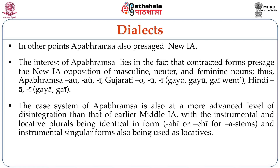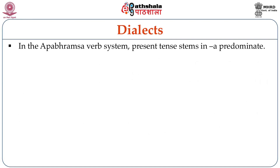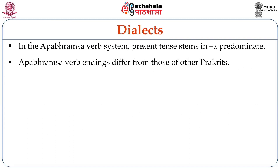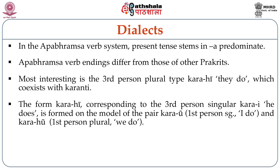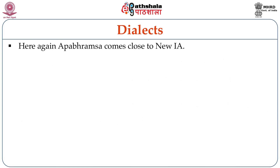In the Apabhramsha verb system, present tense forms in -ai are predominant. Apabhramsha verb endings differ from those of other Prakrts. Most interesting is the third person plural type karahi (they do), which coexists with karanthi. The form karahi, corresponding to the third person singular karai (he does), is formed on the model of the pair karau (first person singular I do) and karahu (first person plural we do). Here again, Apabhramsha comes close to New Indo-Aryan.